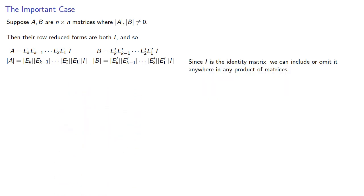Since I is the identity matrix, we can include or omit it anywhere in any product of matrices. So if we find this product A, B, we can simply drop the identity matrix.